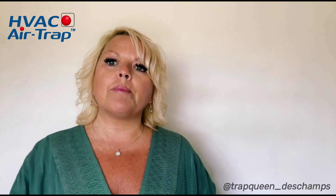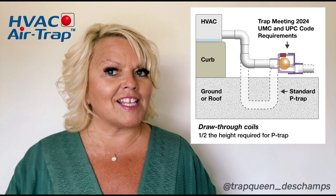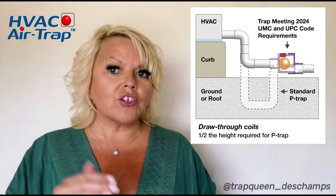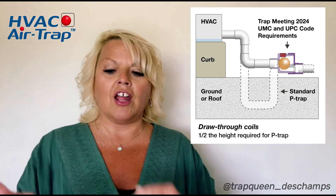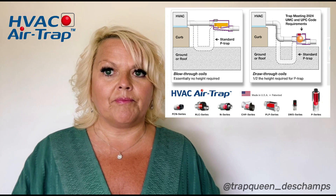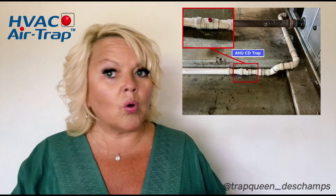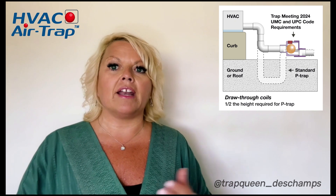Why is it called the air trap? The air trap uses the air pressure of the equipment to maintain the seal. The air trap does not require quite the height that a standard P-trap requires. What the air trap requires is that same static pressure plus one inch for a safety factor — to account for dirty filters, dirty coils, or anything that increases the static pressure. Now you've solved the problem and you don't have to put holes in roofs or jackhammer mechanical rooms to gain enough height. You can see from the image on the screen the difference in space required between a standard P-trap and an HVAC air trap.